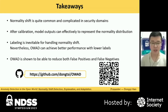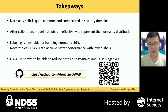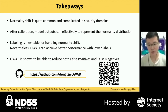Here are some takeaways. First, normality shift is quite common and complicated in security domains. Second, model outputs after calibration can efficiently represent the normality distribution. Third, although labeling is inevitable for handling normality shift, OWAD can achieve better performance with lower labeling overhead. Finally, OWAD is shown to reduce both false positives and false negatives. We have released the code of OWAD on GitHub — you can try it for any anomaly detection model.